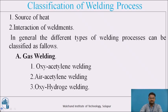The first type is gas welding. Under gas welding, the subtypes are: oxy-acetylene welding, air-acetylene welding, and oxy-hydrogen welding.